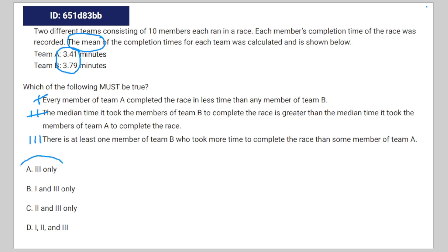Choice three must be the correct answer. It states: there's at least one member of Team B who took more time to complete the race than some member of Team A. This is common sense — if every single member of Team B ran faster than every single member of Team A, the average of Team B wouldn't be greater than the average of Team A. So the answer is choice three only.